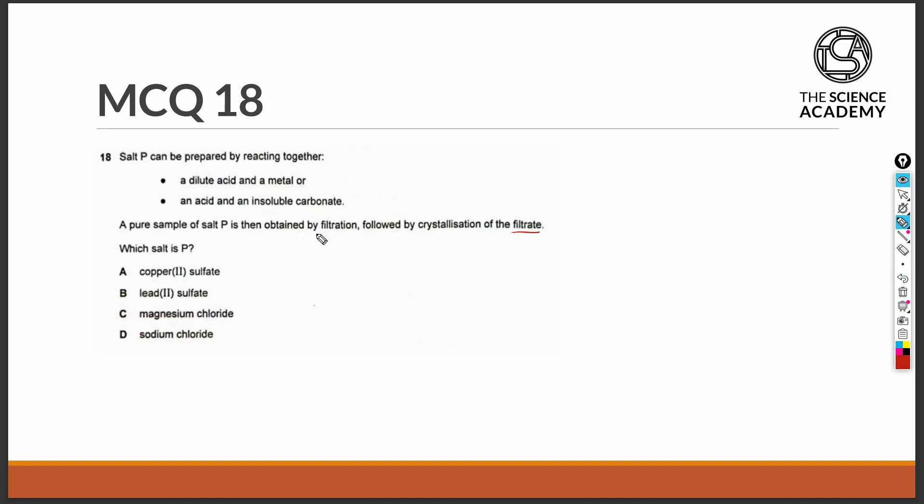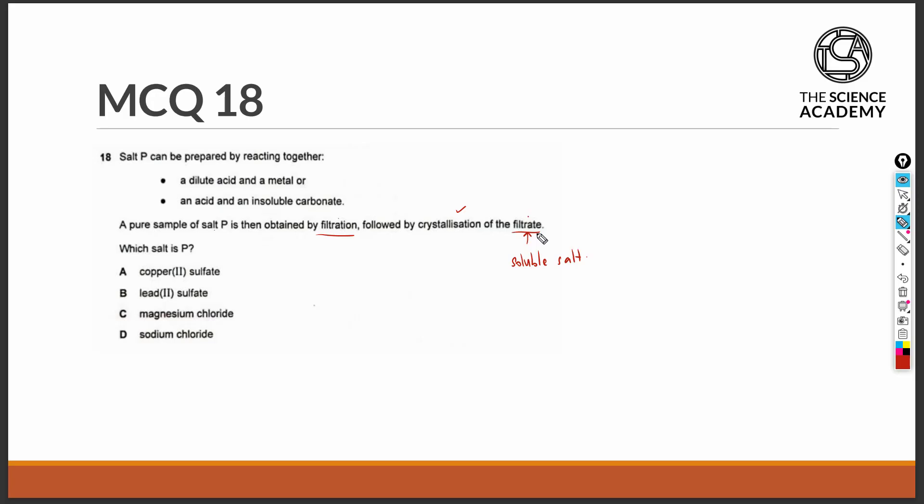We know that by obtaining the filtrate after filtration and then obtaining the salt via crystallisation, the salt must have been a soluble salt which was dissolved in the water and therefore collected as the filtrate after filtration. In our options, we should eliminate all the insoluble salts. Out of all four options, lead sulphate is an insoluble salt. All sulphate salts are soluble except for calcium, barium, and lead 2 sulphate.